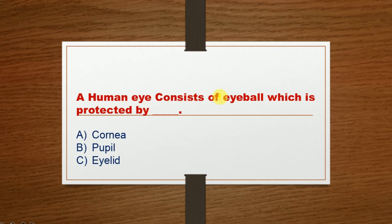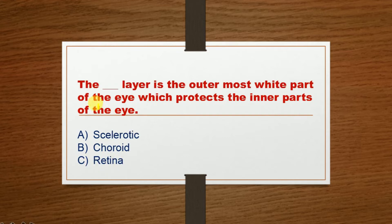Next question: A human eye consists of an eyeball which is protected by dash. Option A: Cornea, Option B: Pupil, Option C: Eyelid. The correct option is Option C: Eyelid.